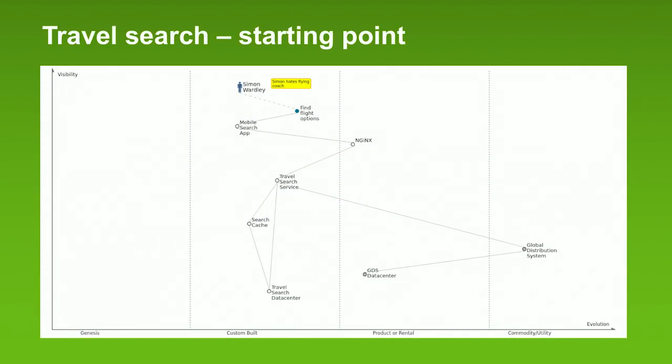Here's the starting point. I'm going to use Simon Wardley himself as the example. If you follow him on Twitter, you see him occasionally grumbling about how uncomfortable aircraft are. So his starting scenario is: he's trying to find a flight using a flight option, and there's a mobile search app that talks to Nginx, which talks to the travel service. There's also a search cache, and those are running in a travel search data center. The actual data the travel search service uses comes from a global distribution system — examples include Sabre and Amadeus — and that runs in a data center itself.